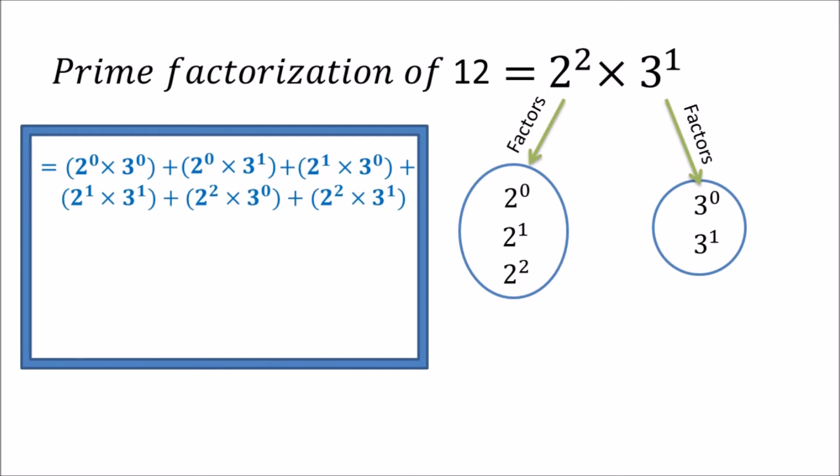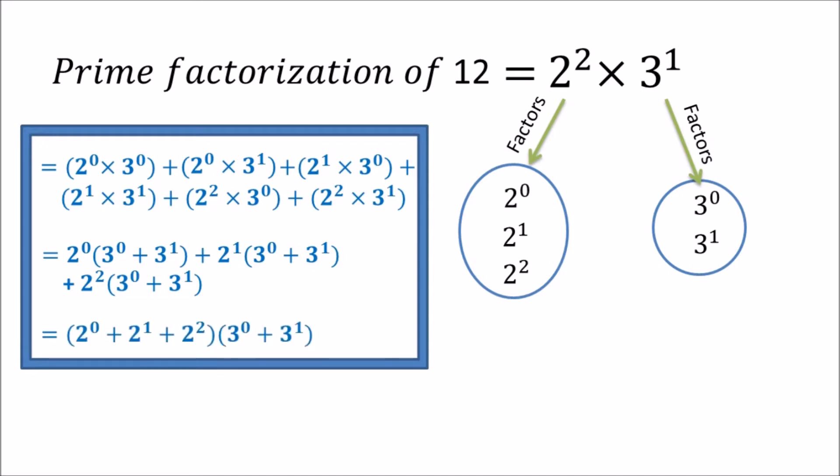Now we need to generalize a method so that we can directly find the sum of divisors of a number. Taking 2 raised to 0 common from the first two terms, 2 raised to 1 from the next two, and 2 squared from the last two, we observe that 2 raised to 0 plus 2 raised to 1 plus 2 squared forms a geometric progression.